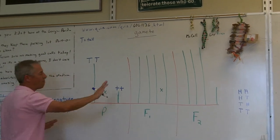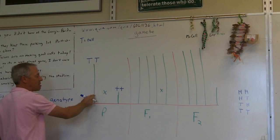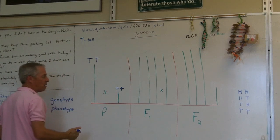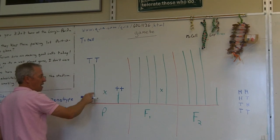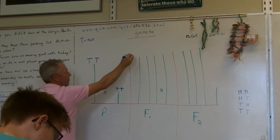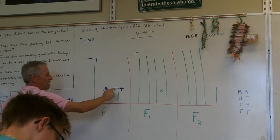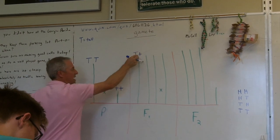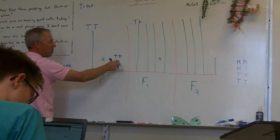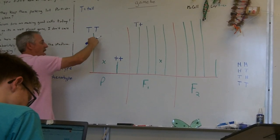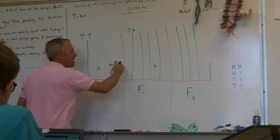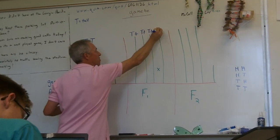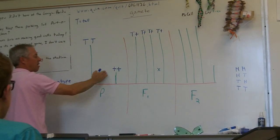If you mated these two, what Mendel said was that each parent can contribute only one of its two genes to its offspring. So this parent can contribute a big T, and this parent can contribute a little t. Each kid gets one gene from its dad and one gene from its mom. So each of these kids is going to be big T, little t — every kid from these parents.